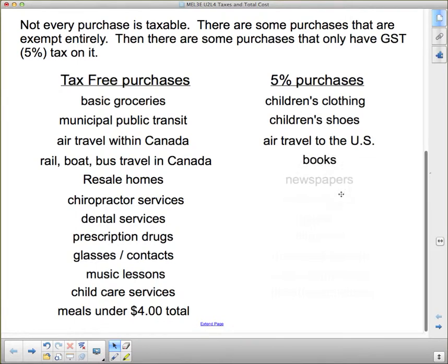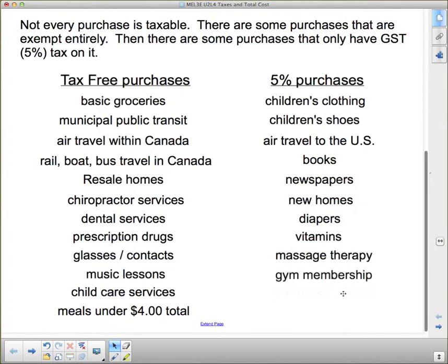Books, you only pay 5%. Newspapers. New homes, so these are homes that are brand new that have not been purchased before. Diapers, vitamins, massage therapy, gym memberships, and live theater tickets. That's not movie theater, it's live theater tickets. I think there is a restriction on the number of seating. If there's less than 3,000 seats in the theater, they're exempt from the PST portion. You just have to pay the 5% GST. That's a list of things that are tax free and tax reduced.